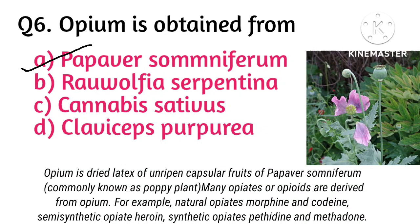Opium is considered the king of narcotics. Many opiates and opioids are derived from opium. For example, natural opiates are morphine and codeine; the semi-synthetic opiate is heroin; and synthetic opiates include pethidine and methadone.